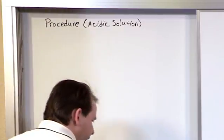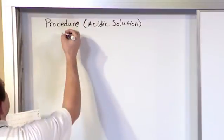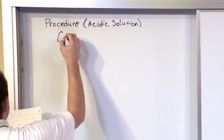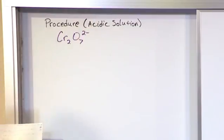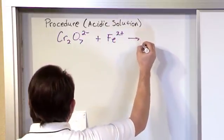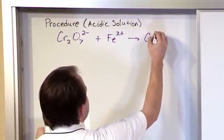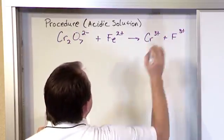So the reaction is, let me switch colors over here. The reaction is Cr2O7, this is an ion that has negative 2. This is called a dichromate ion. Plus iron with a charge of positive 2. And it gives us chromium 3 plus, plus iron also 3 plus.